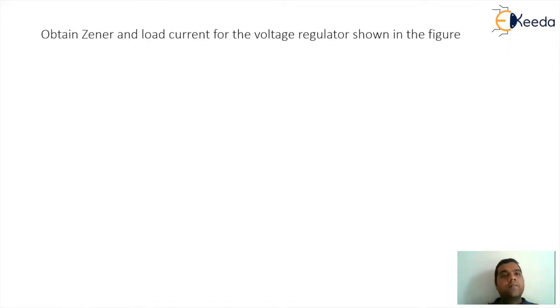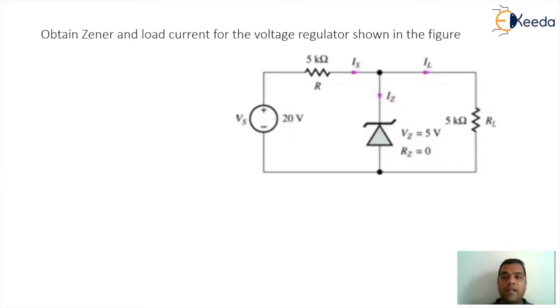The question is: obtain Zener and load current for the voltage regulator shown in the figure. So here we are given a diagram. The supply voltage is 20 volt, the resistance R is 5 kilo ohm. The current coming from the source is IS, which will split into two parts IZ and IL. The voltage for the Zener VZ is 5 volt, and the load current is flowing through RL of 5 kilo ohm.